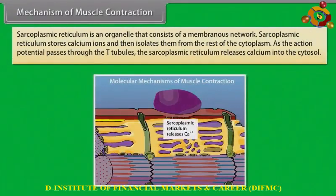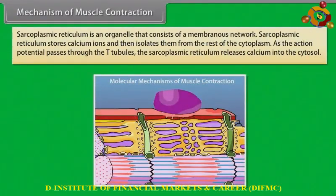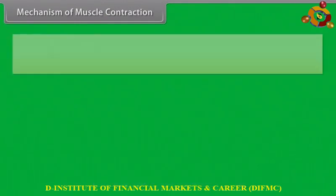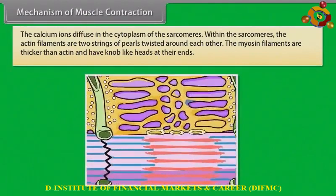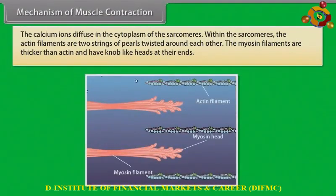Sarcoplasmic reticulum is an organelle that consists of a membranous network. It stores calcium ions and isolates them from the rest of the cytoplasm. As the action potential passes through the T-tubules, the sarcoplasmic reticulum releases calcium into the cytosol. The calcium ions diffuse into the cytoplasm of the sarcomeres.